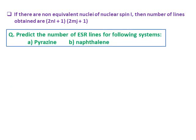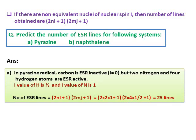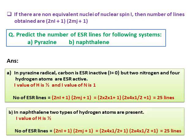Predict the number of ESR lines for pyrazine and naphthalene. For pyrazine: carbon is ESR inactive, but 2 nitrogen atoms and 4 hydrogen atoms are ESR active. I(H)=1/2 and I(N)=1. Number of lines = (2×2×1+1)×(2×4×(1/2)+1) = 5×5 = 25 ESR lines. For naphthalene: there are 2 types of hydrogen atoms — 4 equivalent HA and 4 equivalent HB — giving (2×4×(1/2)+1)×(2×4×(1/2)+1) = 5×5 = 25 ESR lines.